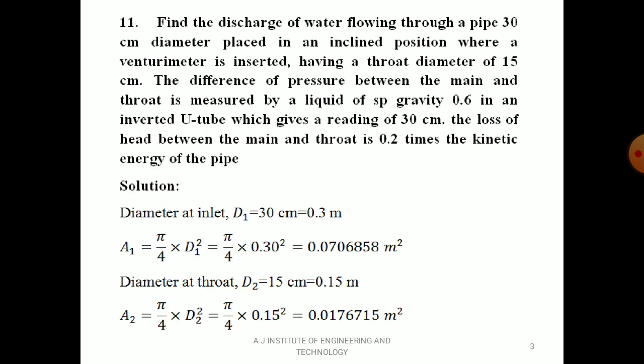Find the discharge of water flowing through a pipe of 30 cm diameter, placed in an inclined position where a Venturimeter is inserted, having throat diameter of 15 cm. The difference of pressure between main and throat is measured by a liquid of specific gravity 0.6 in an inverted U-tube, which gives a reading of 30 cm. You are supposed to find the discharge Q.